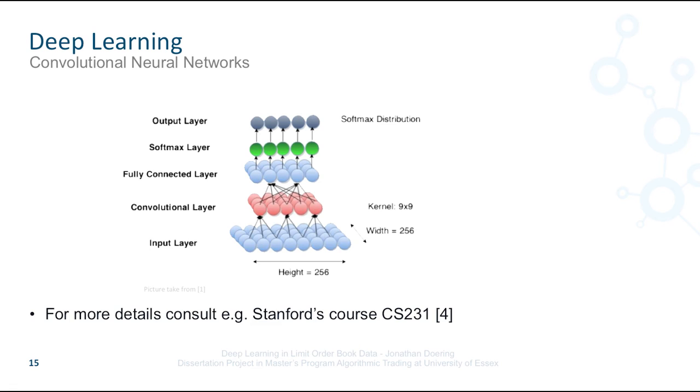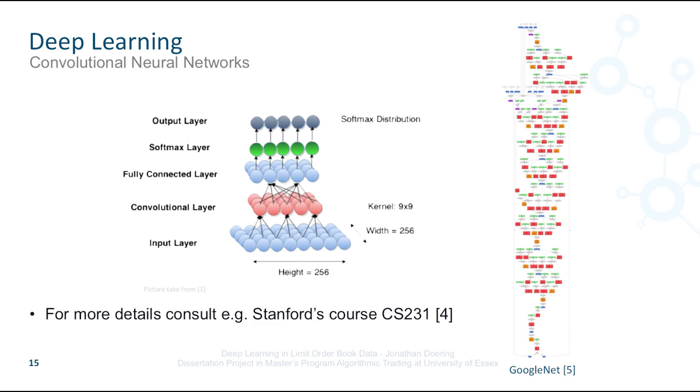Although this example is a quite small network, more practical designs consist of great plenty of different layers. As an example, the winner of the ImageNet large-scale visual recognition competition in 2014, called GoogleNet, consists of 22 different layers, including a wide range of different types like pooling and ReLU layers.